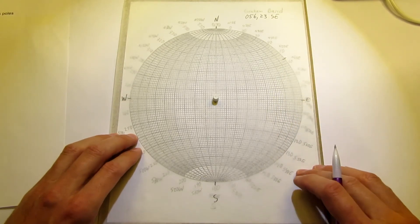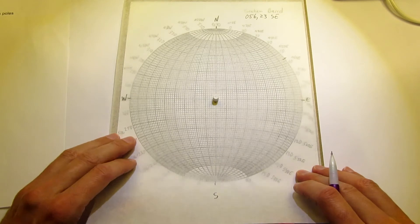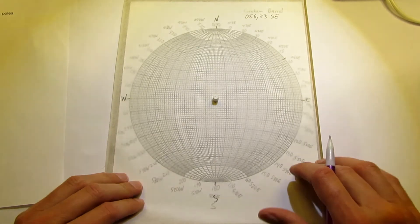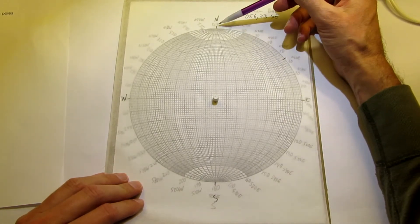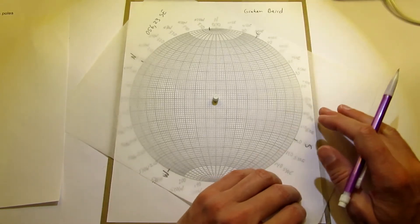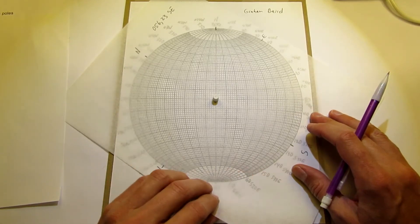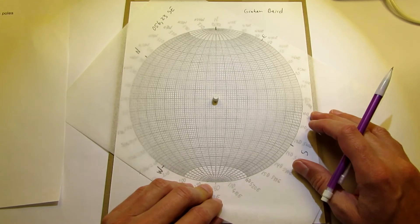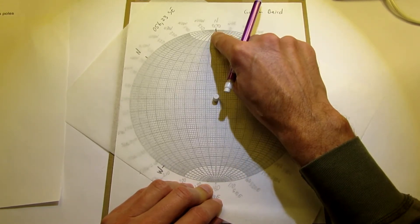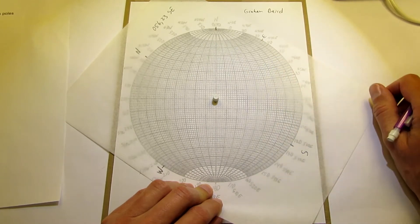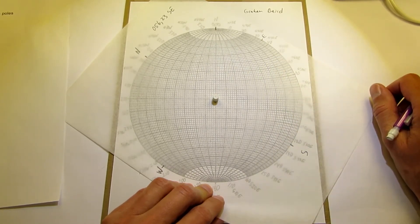When in doubt of where to rotate the tracing paper, the safe bet is always put it to north-south right there. As you get more experience, you'll realize that sometimes you can rotate whatever compass direction you mark on the outside to east-west. But if you're not sure, just always put it to north and you'll be fine.